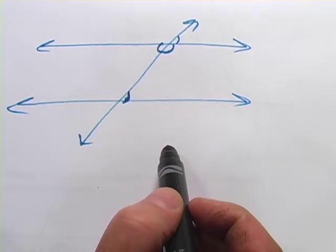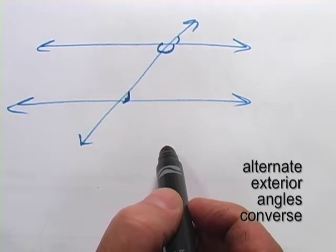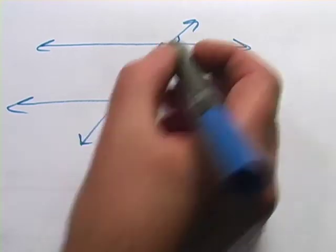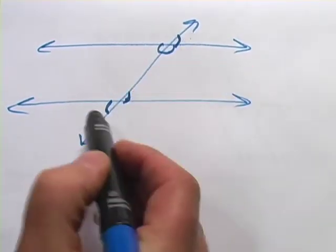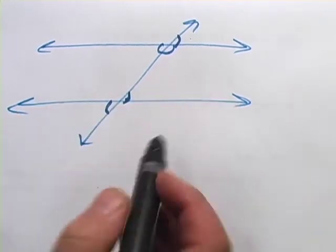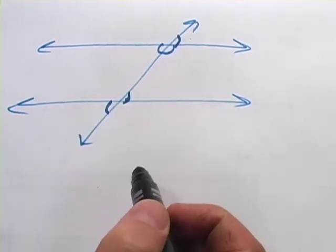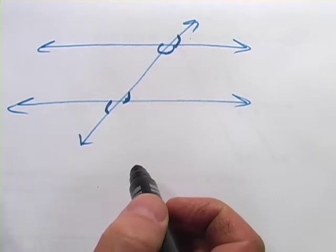And then there's also the alternate exterior angles converse. So let's say this angle and this angle, if those two are the same, that also proves that these two lines are parallel. So that's what we're talking about when we're talking about converses.